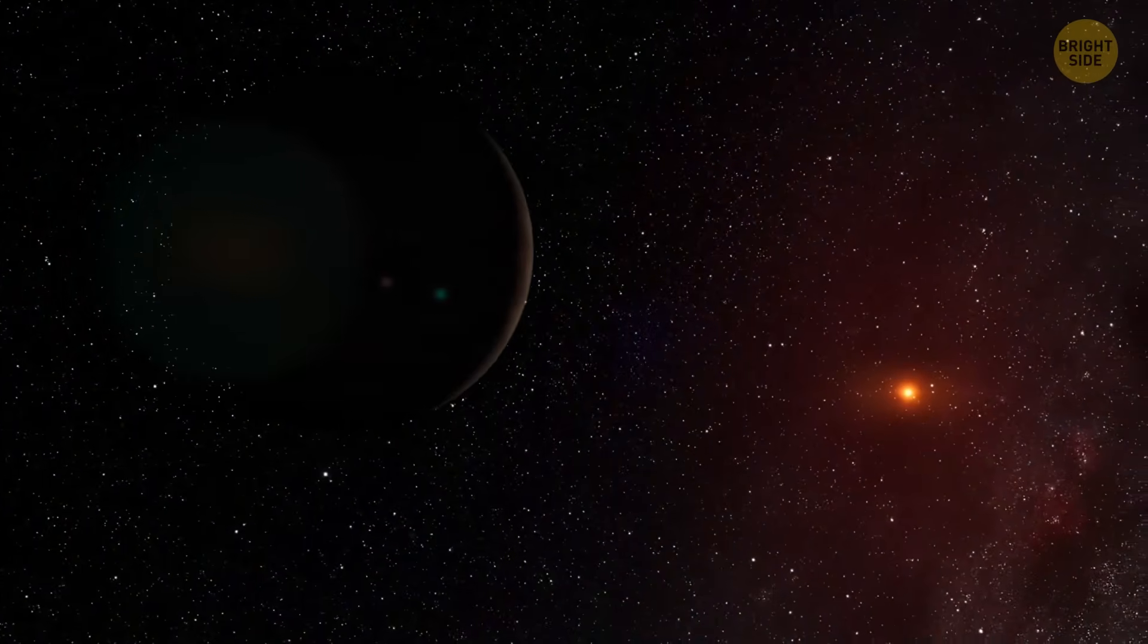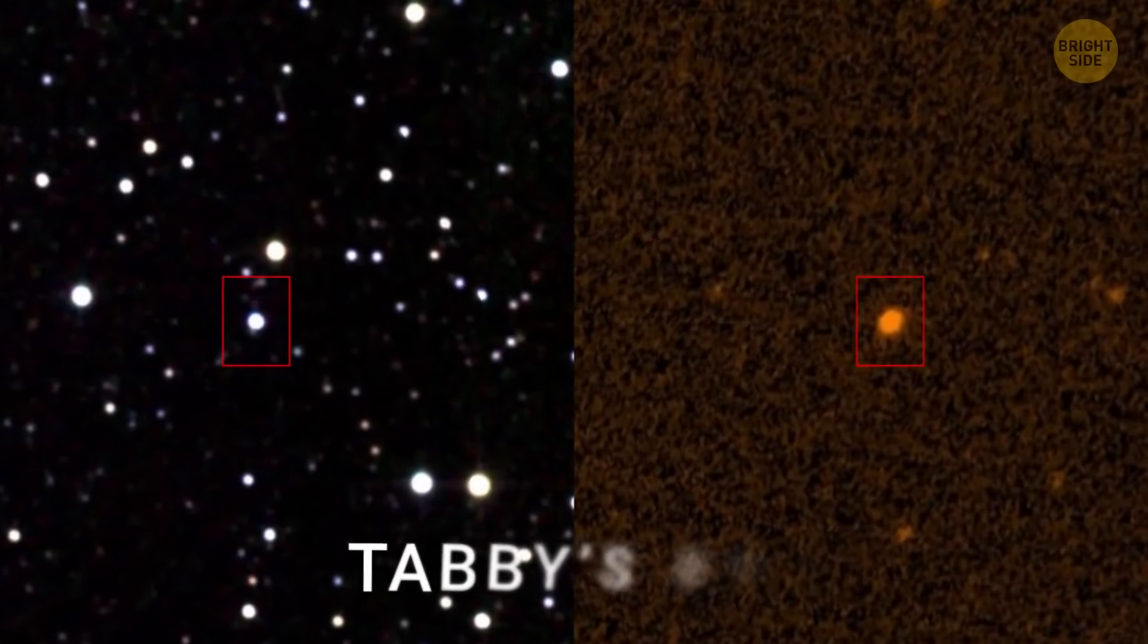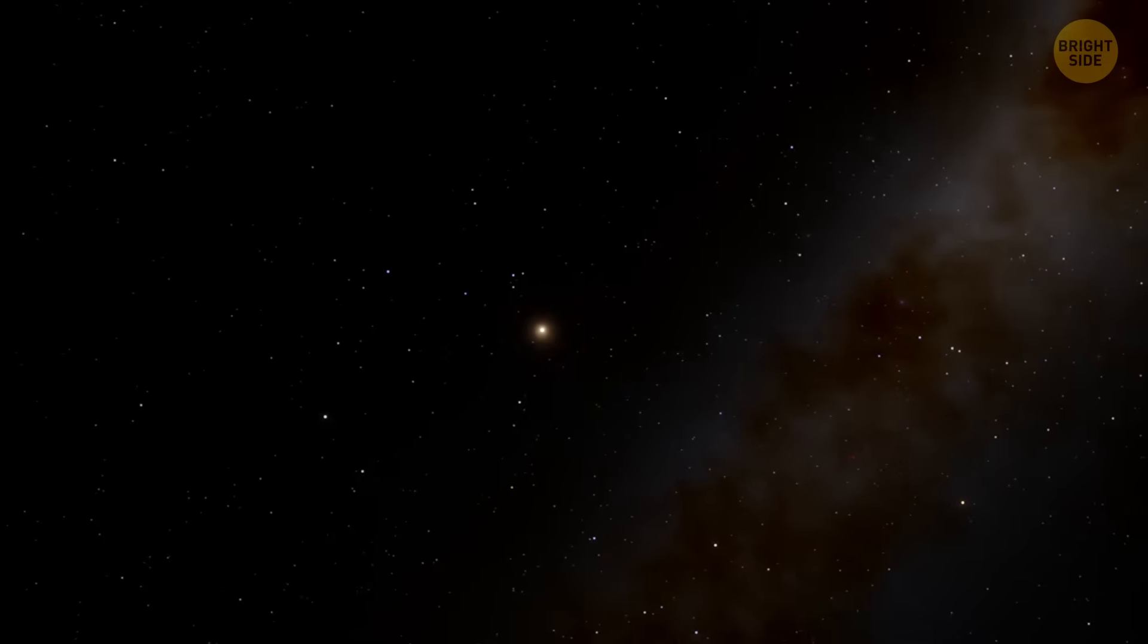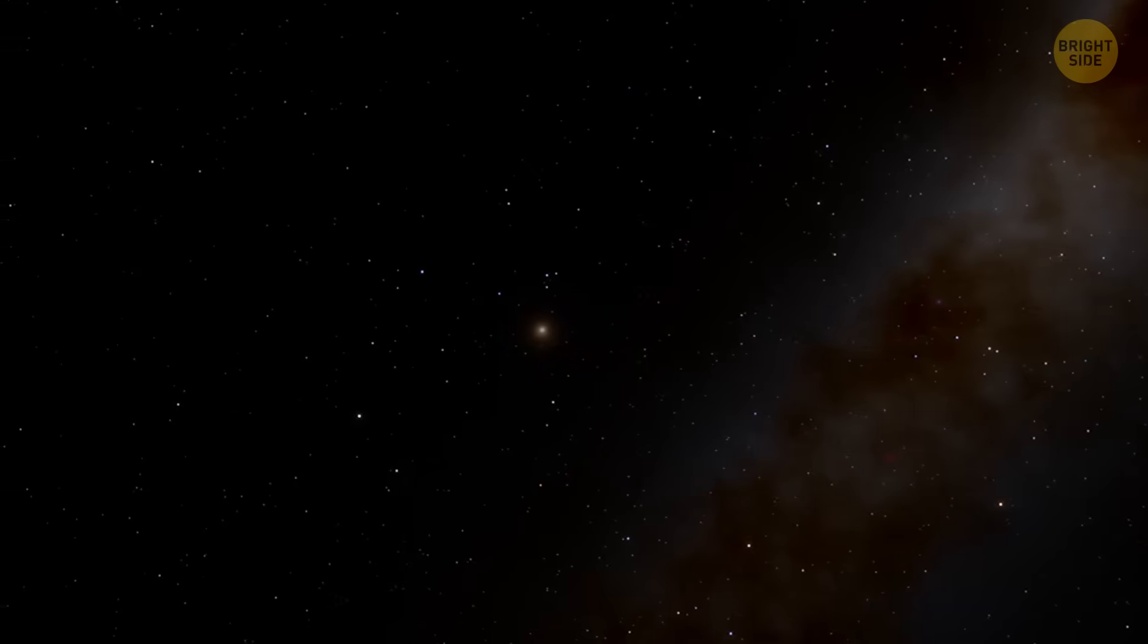These stars are mostly small, faint red dwarfs. One of them is especially famous, called Tabby Star. It blinks and dims in weird random ways, dropping in light by 22% from time to time.